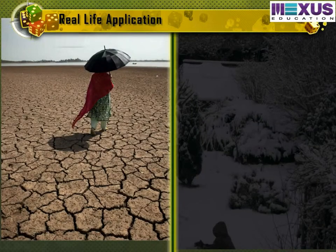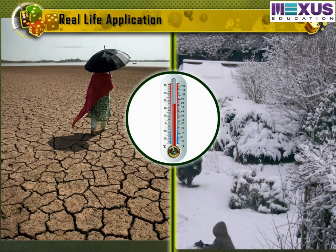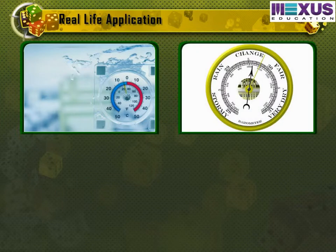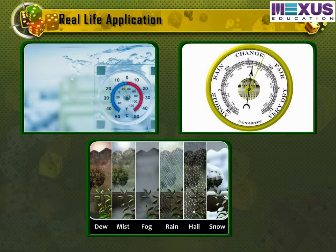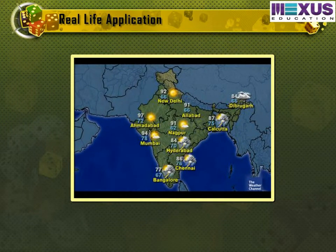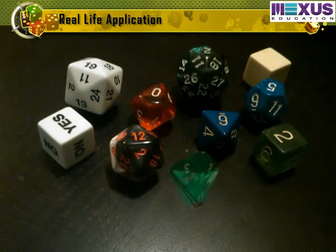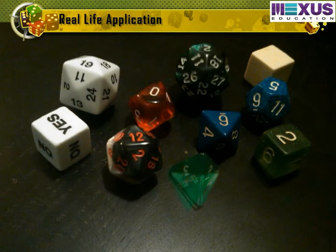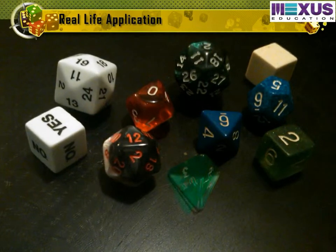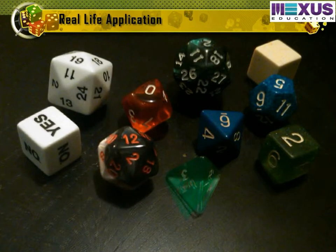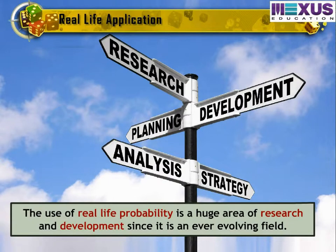When planning an outdoor activity, people generally check the probability of rain. Meteorologists also predict the weather based on patterns of previous years. Temperatures and natural disasters are also predicted on probability, and nothing is ever stated as a surety, but as a possibility and an approximation. Therefore, even though we do not realize the use of mathematical probabilities in everyday life, subconsciously we use it in every step that we take. The use of real-life probability is a huge area of research and development, since it is an ever-evolving field.